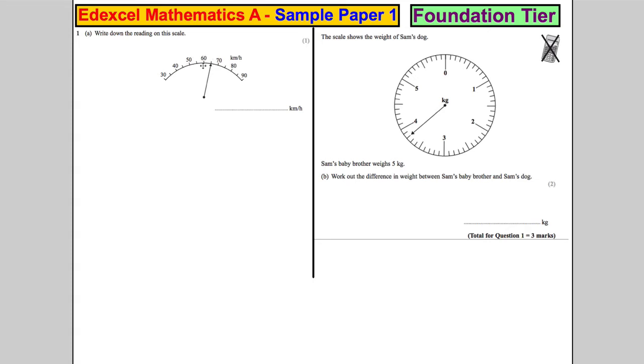So we're on 60 here and we go one division on it. It must be 65 so we can get to 70. So it's 65 kilometres per hour.